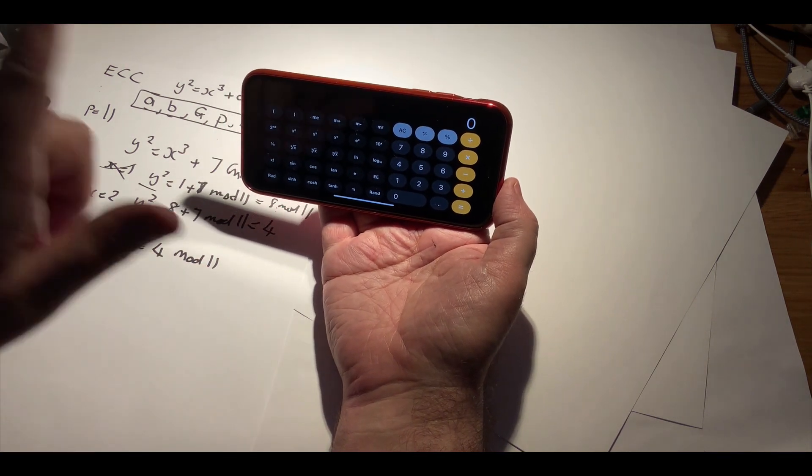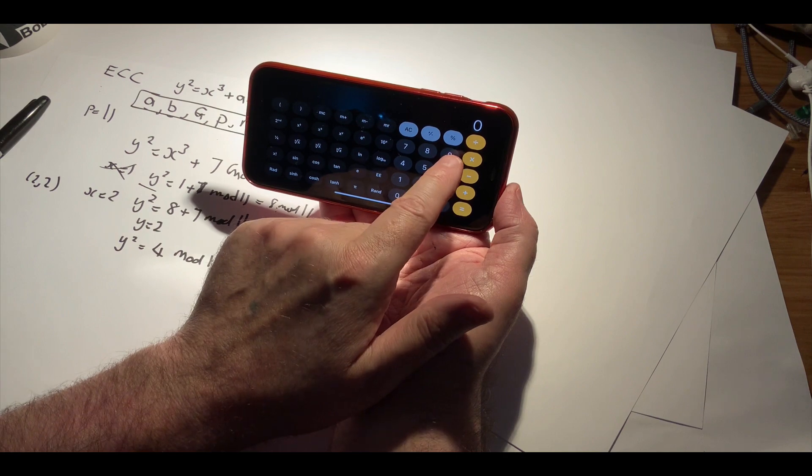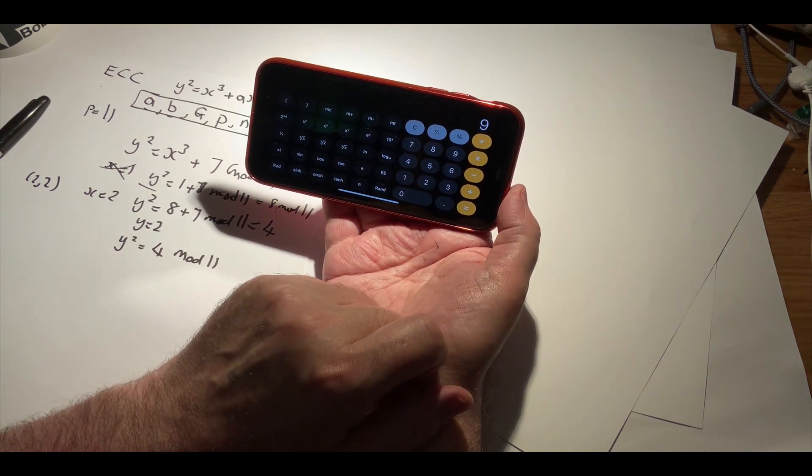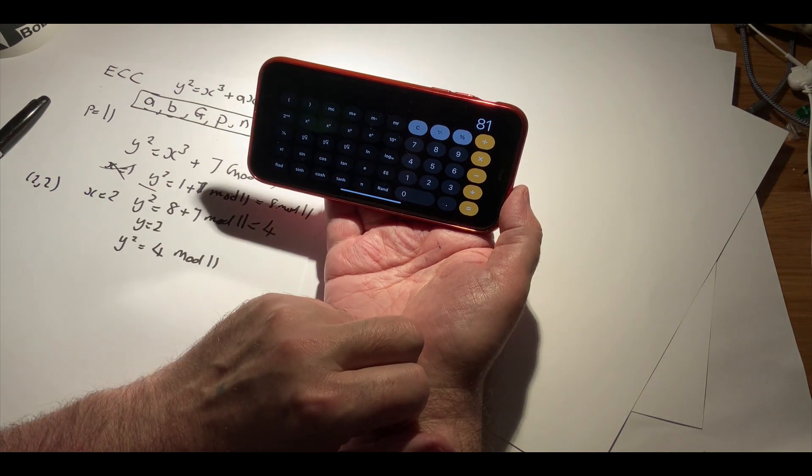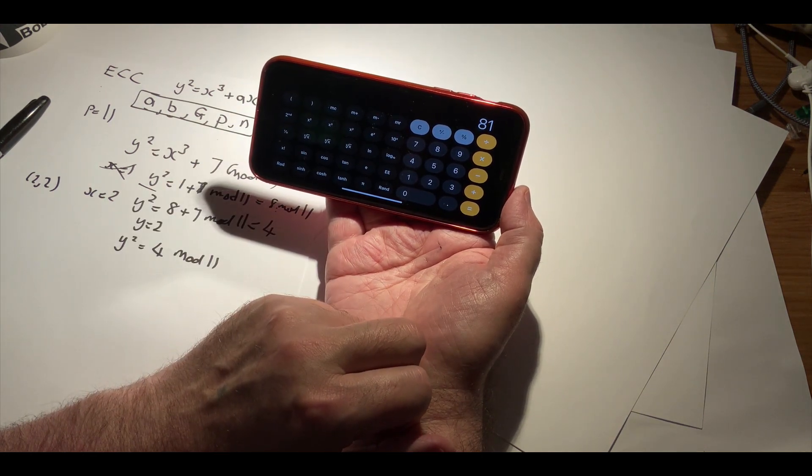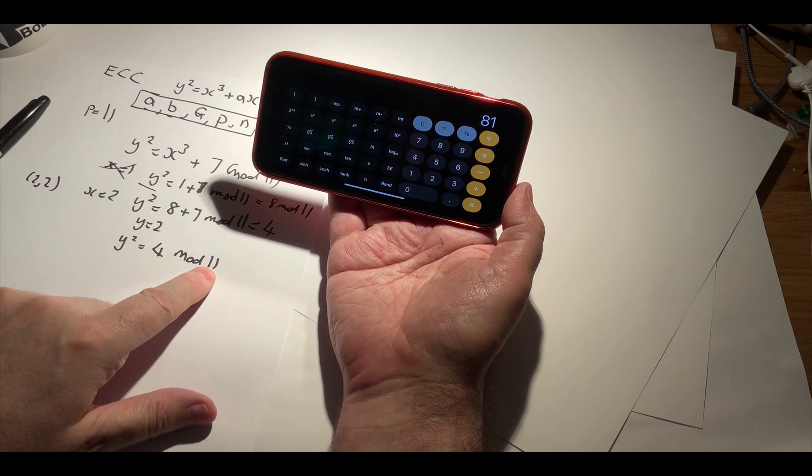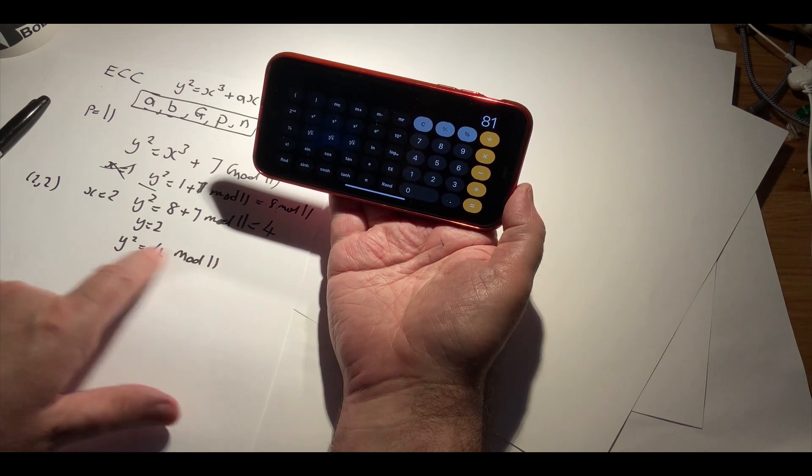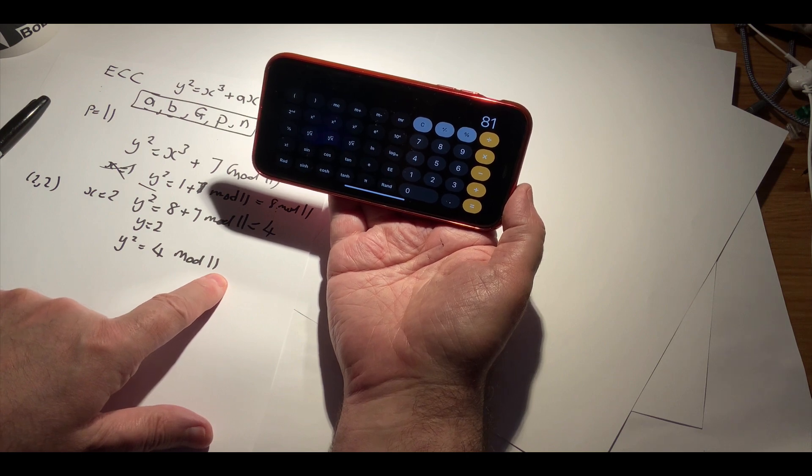So if we take 9 squared and then we do a mod 11, then we will get 7... and we'll get a result of 4.